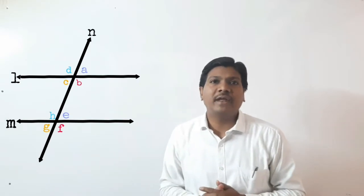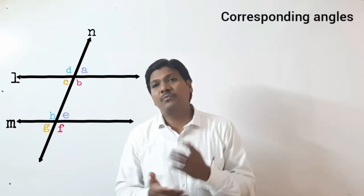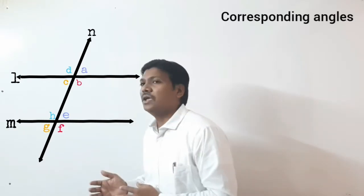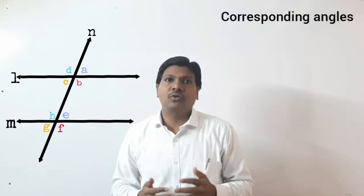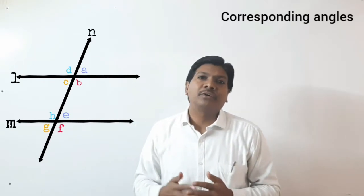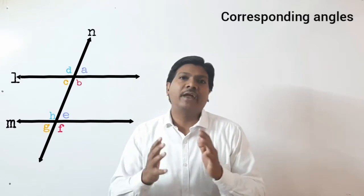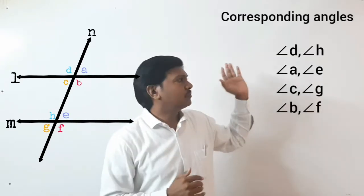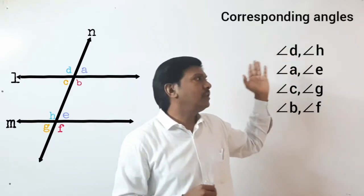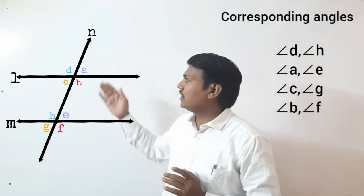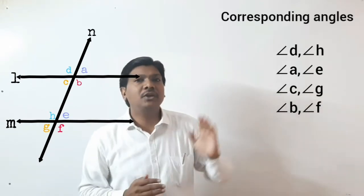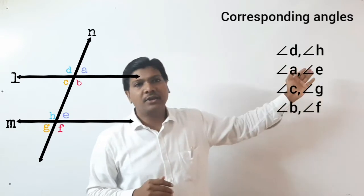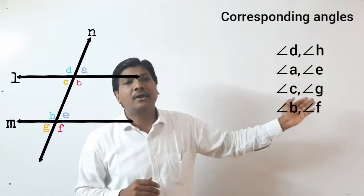The first pair is corresponding angles — pairs of corresponding angles. The corresponding pairs are: first pair is angle D and angle H, second pair is angle A and angle E, third pair is angle C and angle G.